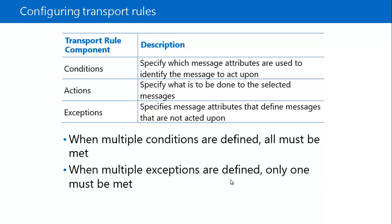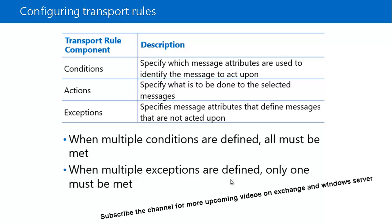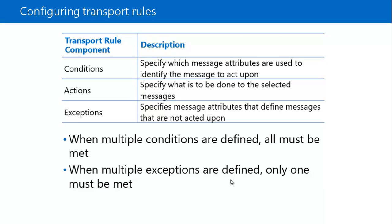An action specifies what is to be done to the selected message. Exchange Server applies actions to email messages that match the condition and for which no exceptions are present. Each action affects email messages in a different way, such as redirecting the email message to another address or dropping the message. Exceptions specify message attributes and define messages that are not acted upon.